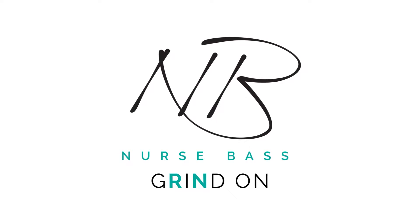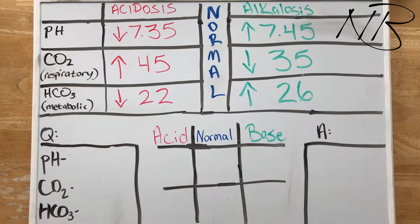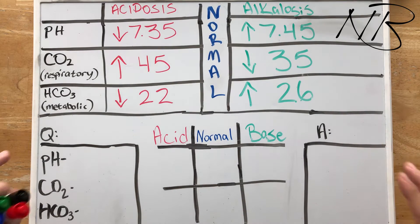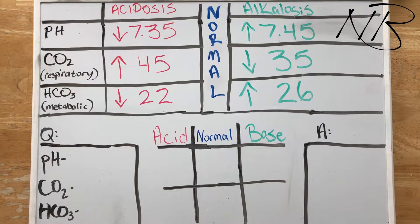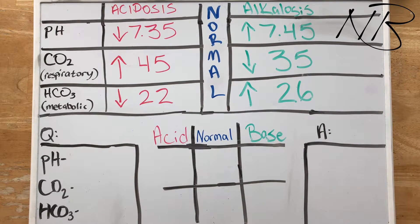In the previous video, if you haven't seen it, make sure you go check it out first. We break down exactly how to utilize this tic-tac-toe method to solve ABGs. But now that we've got that behind us and we know the basic layout of this table and what everything means, I want to begin to dive into some test questions. Bear in mind that these right here in this video are going to be the most basic kinds of ABG questions you can be asked, no compensation involved.